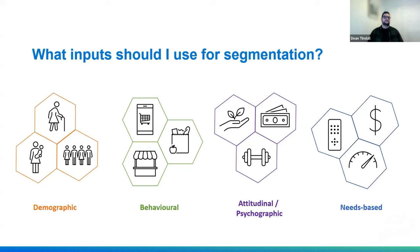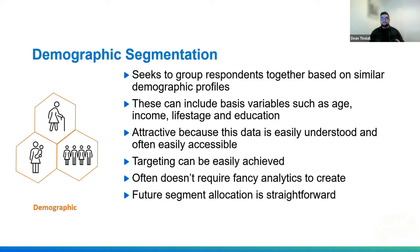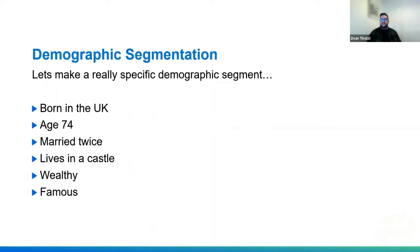Demographic segmentation groups respondents based on similar demographic profiles — things like age, income, lifestyle, and education. You hear this when people talk about millennials, boomers, or Gen Z. It's attractive because the data is easily understood and often accessible, you can target people based on demographics without fancy analytics, and future allocation is straightforward. However, even a very specific demographic segment — born in the UK, 74 years old, married twice, living in a castle, wealthy, famous — can still give you two very different people, like King Charles and Ozzy Osbourne.